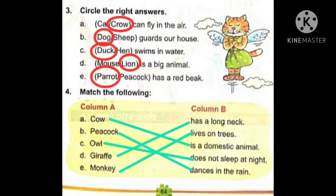Number B: dog or sheep guards our house. Kaun humare ghar ki rakhwali kar sakta hai? The correct answer is dog, so we will encircle dog. Number C: duck or hen swims in water. Duck or hen mein se kaun si bird hai jo water mein swim kar sakti hai? It is a duck, so we will encircle duck here.